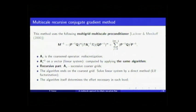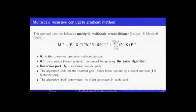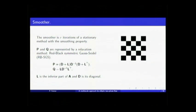The algorithm ends on the coarsest grid, where we solve the linear system by a direct method — LU factorization. At the coarsest level, the size of the matrix is not very large, so we can use a direct method without problems. The algorithm itself determines the effort necessary at each level. P and Q are the smoother — the Dismulter — which is an iteration of a stationary method. This is where our algorithm combines those three types of linear system methods. We have a fixed number of iterations, and the objective of the smoother is to reduce the high-frequency components of the solution.